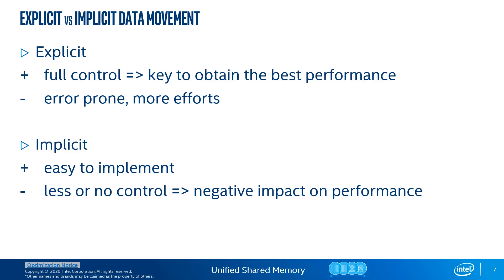The best strategy for a program can depend on many different factors. Different strategies might be used for different phases of program development, and you can mix and match explicit and implicit methods for different pieces of a program. For example, start with implicit data movement to simplify porting an application to a new device, then as you begin tuning for performance, start replacing implicit data movement with explicit in performance-critical parts of the code.